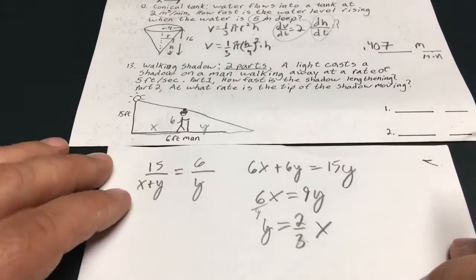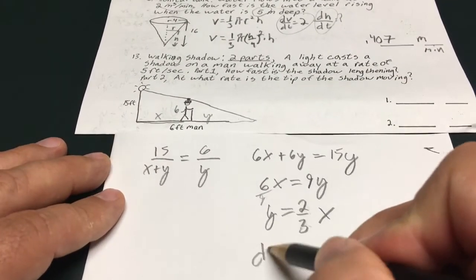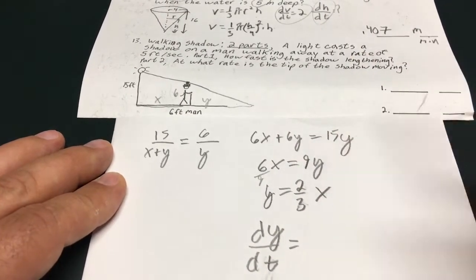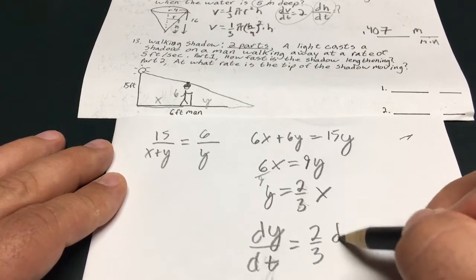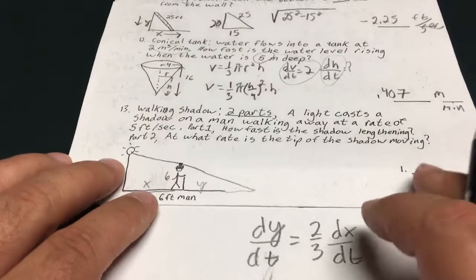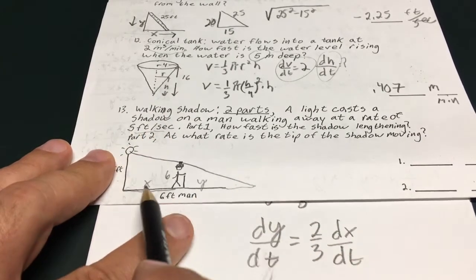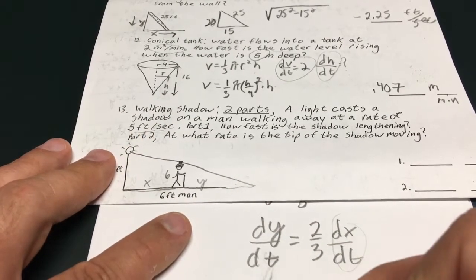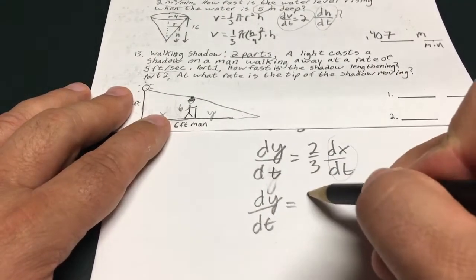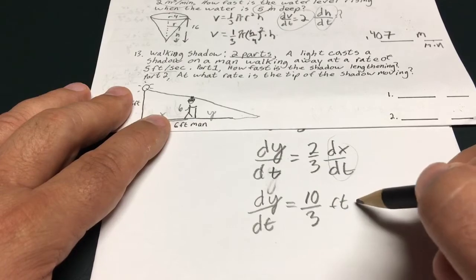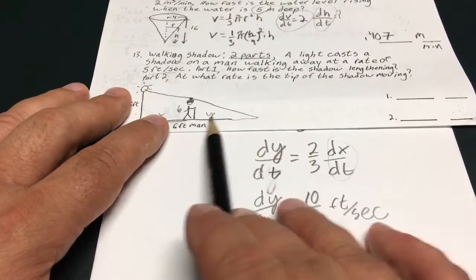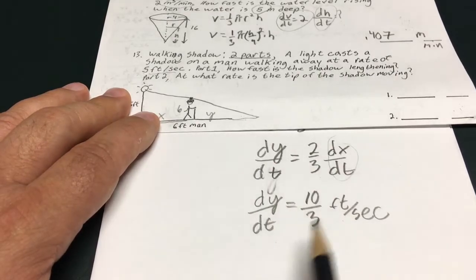Now I'm going to take the derivative of that. So that's going to give me dy/dt equals 2/3 dx/dt. And I know what dx/dt is. dx/dt is how fast he's walking away. So this is changing at 5. So I can put a 5 in for this and that will tell me what dy/dt is. Equals 10 over 3 feet per second. And I believe that's the answer to part 1. Part 1 is how fast is the shadow lengthening. So dy/dt is 10/3 feet per second.